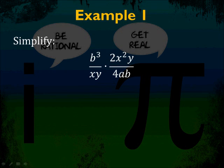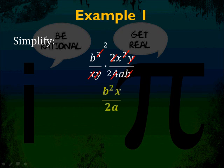Example one: b cubed over xy times 2x squared y over 4ab. Start canceling — the y's disappear, b cubed over b becomes b squared on top, and the b on the bottom is gone. For the x's, x squared on top becomes x because of the x on the bottom. Reducing the fraction, 2 over 4 becomes 1 over 2. So the answer is b squared x over 2a. Cancel common terms, reduce exponents — no negative or zero exponents in the answer.